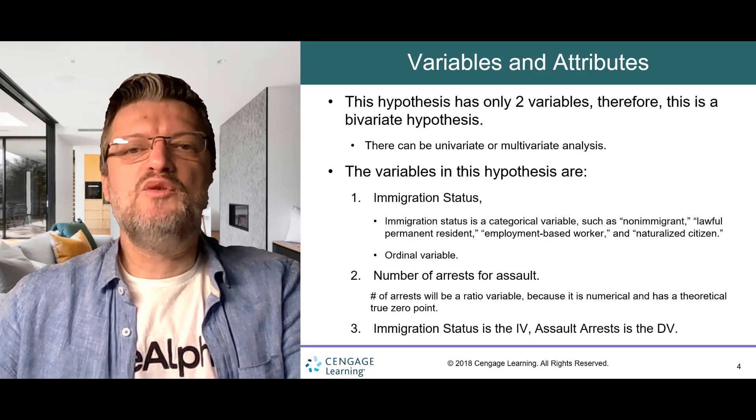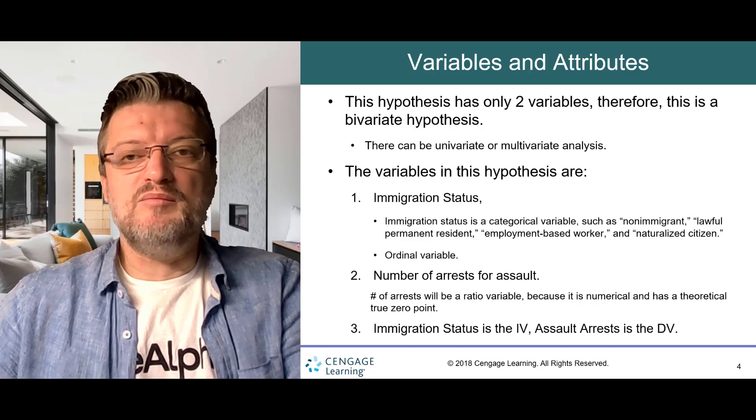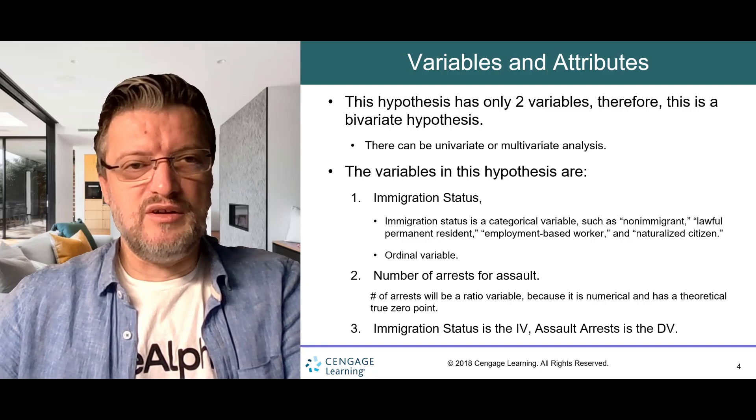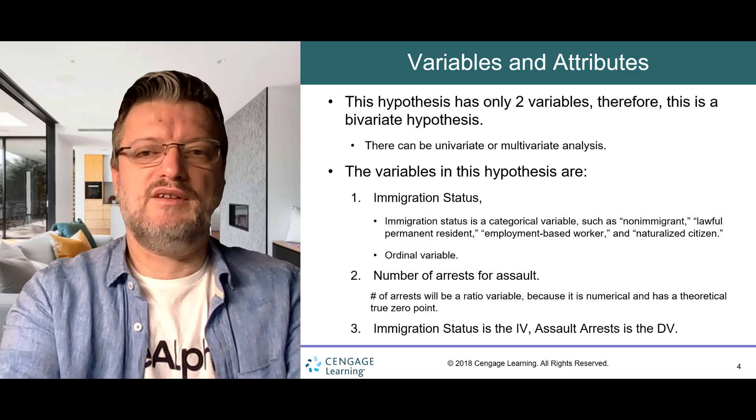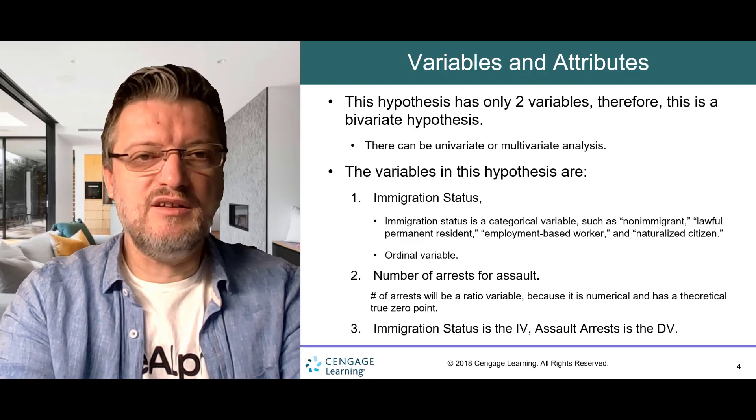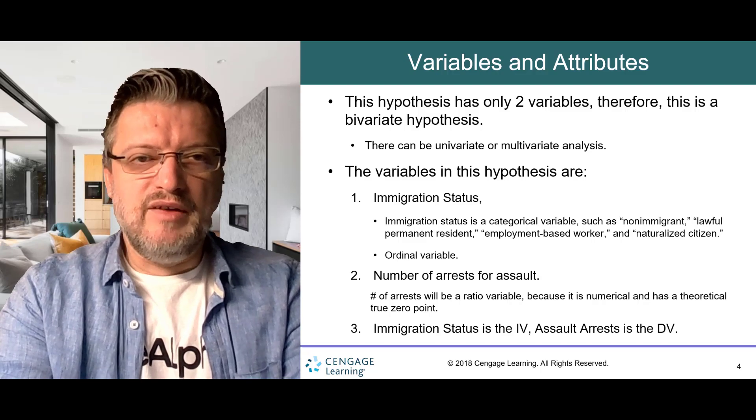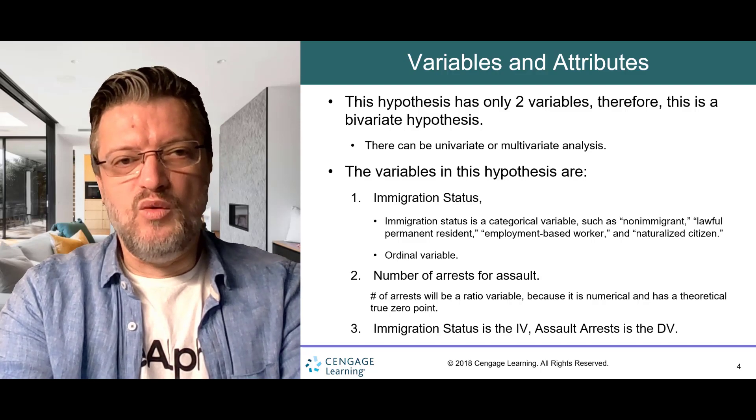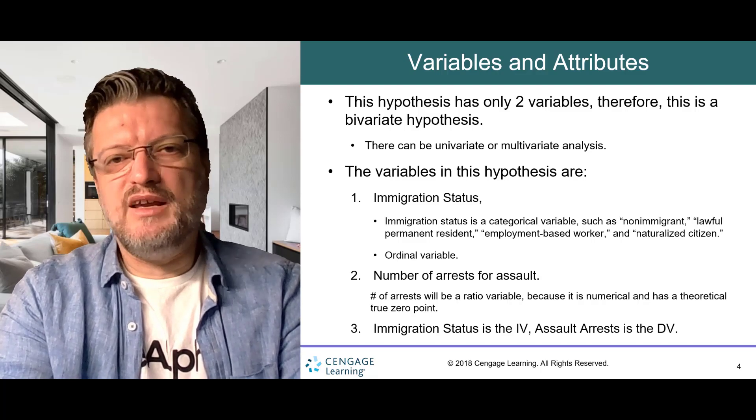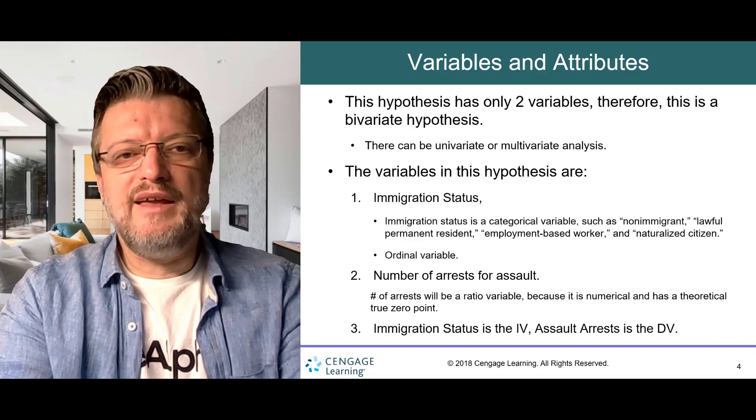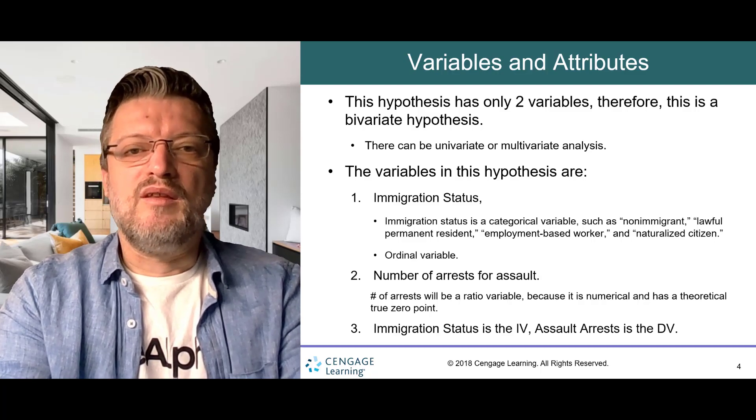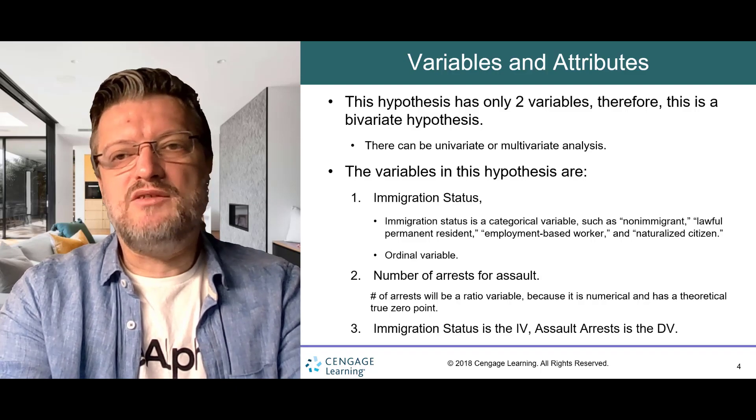This hypothesis has only two variables. Therefore, this is a bivariate hypothesis. There can be univariate, one-variable description, exploratory and explanatory, or multivariate analysis, analysis of more than two variables, where the outcome might be as an effect of more than one predictor or independent variable. The variables in this hypothesis are one, immigration status, and two, number of arrests for assault. Immigration status is a categorical variable because it contains categorical attributes such as non-immigrant, lawful permanent residence, LPR, employment-based immigrant, and naturalized citizen.